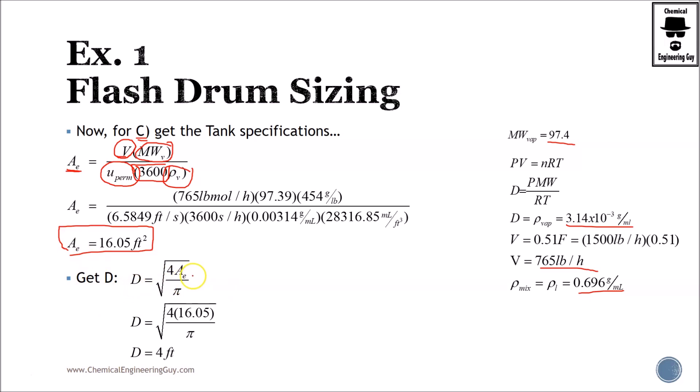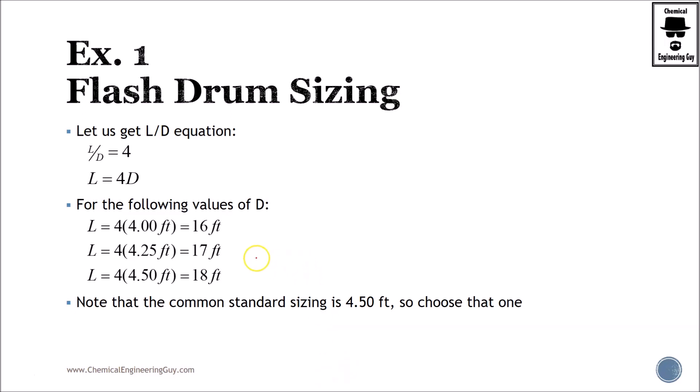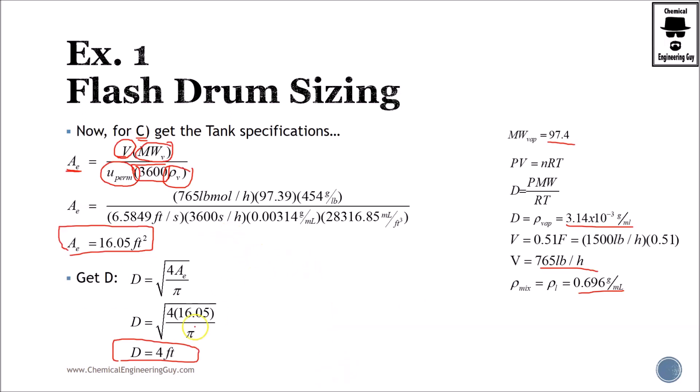If you were to calculate directly the diameter, you will do this: diameter equals 4 times the area divided by pi, 4 times 16 divided by pi, square root gives 4 feet. So that's a first approach, 4 feet.